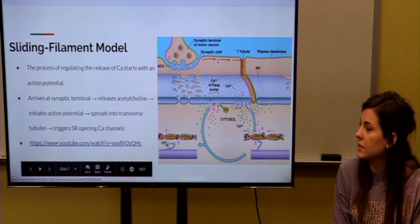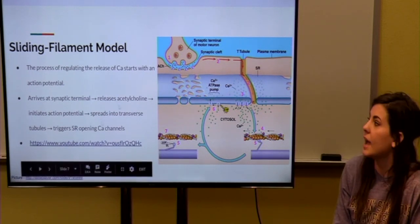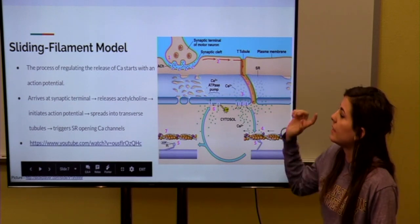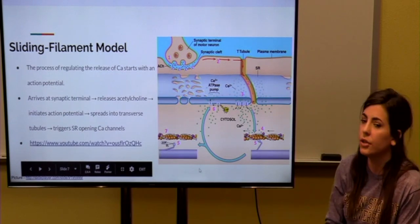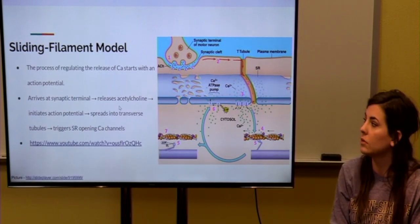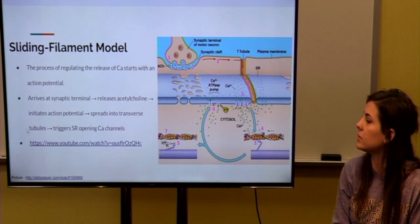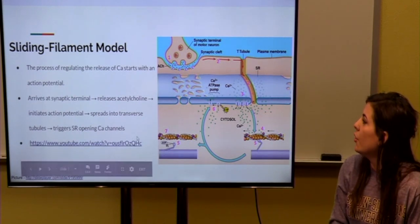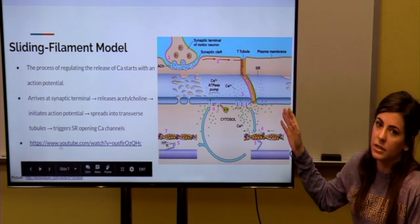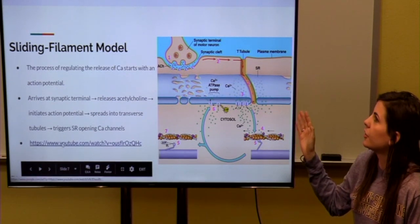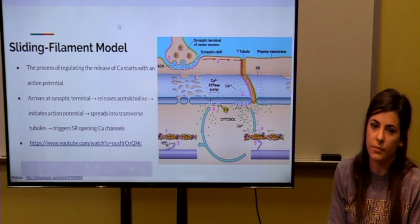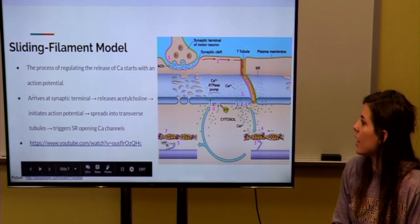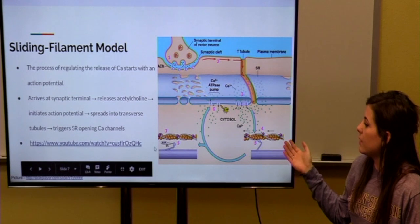So, the process of regulating the release of calcium starts with an action potential. The action potential arises at the synaptic terminal of the motor neuron. And when this happens, a neurotransmitter called acetylcholine is released into the muscle, and it travels along the T-tubule, which then passes through and goes into the sarcoplasmic reticulum, which opens up calcium channels, releasing calcium, and the process of the sliding filament can begin.